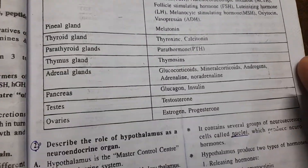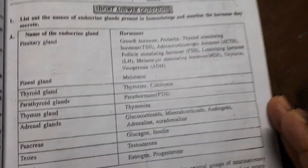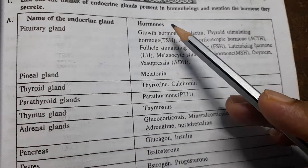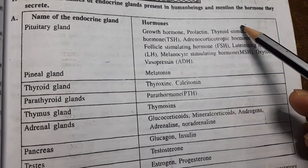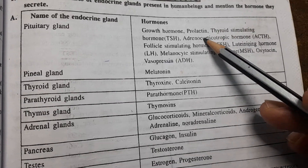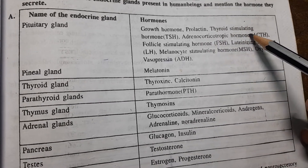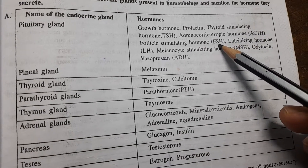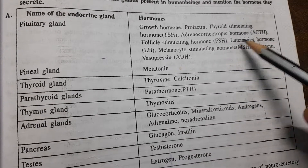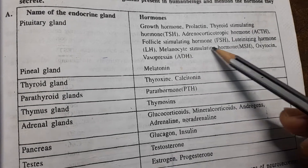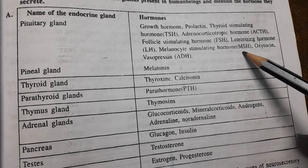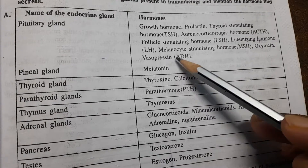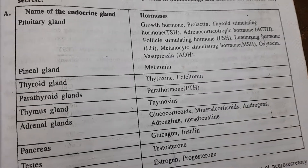Let us see some of the endocrine glands and the hormones secreted by them. Pituitary gland secretes: growth hormone, prolactin, thyroid stimulating hormone, adrenocorticotrophic hormone (ACTH), follicle stimulating hormone (FSH), luteinizing hormone (LH), melanocyte stimulating hormone (MSH), oxytocin, and vasopressin — also called antidiuretic hormone (ADH).